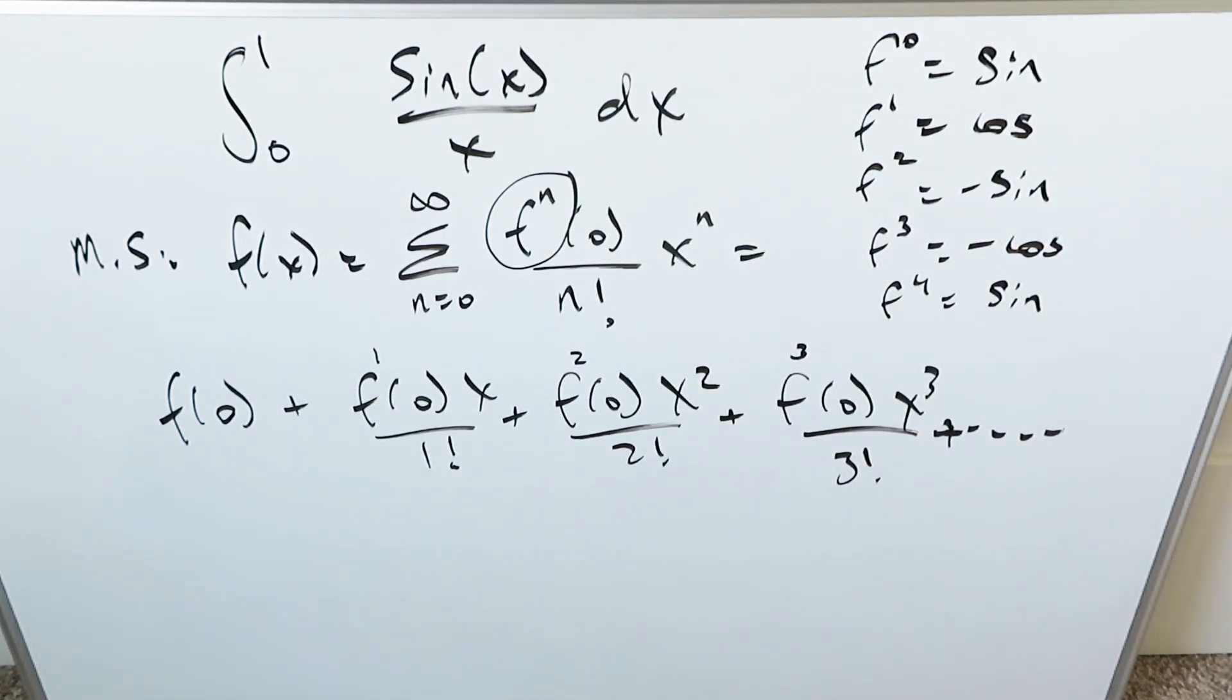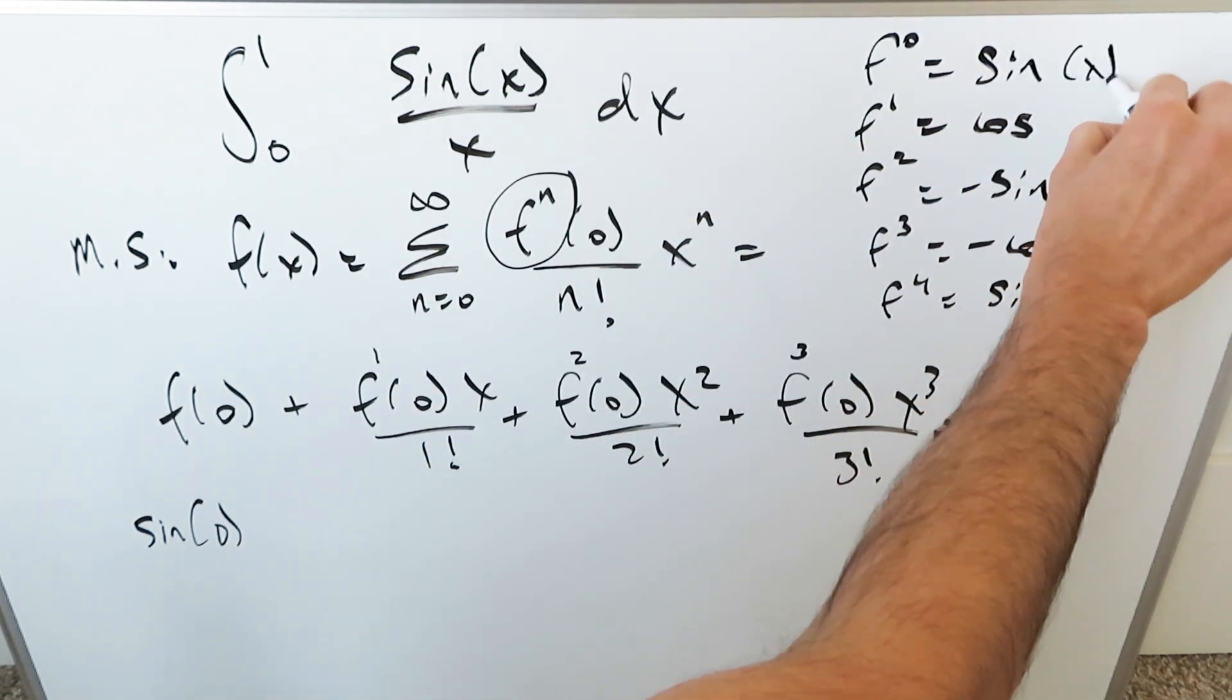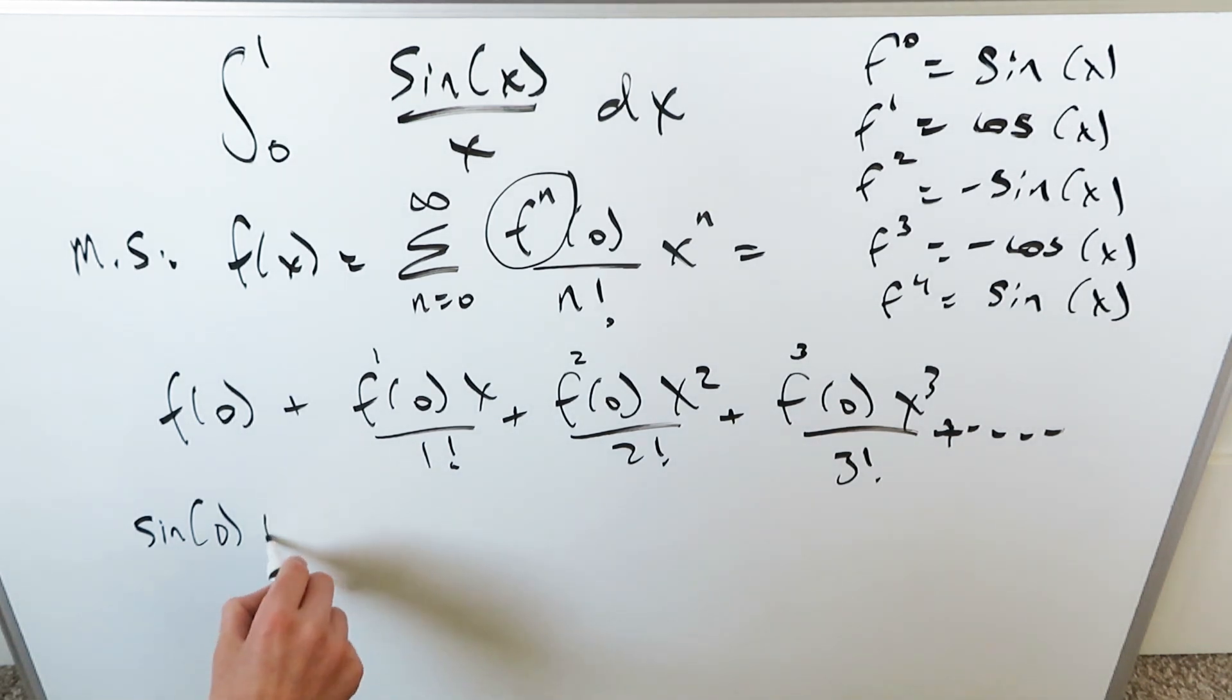Let's bring everything here and develop the series for sine x. When I start plugging in these items, what do I have? I have a sine as my first item with zero coming in - my zero order derivative. When we come down, we'll have cosine 0 coming in here, and then we'll have x divided by 1 factorial.